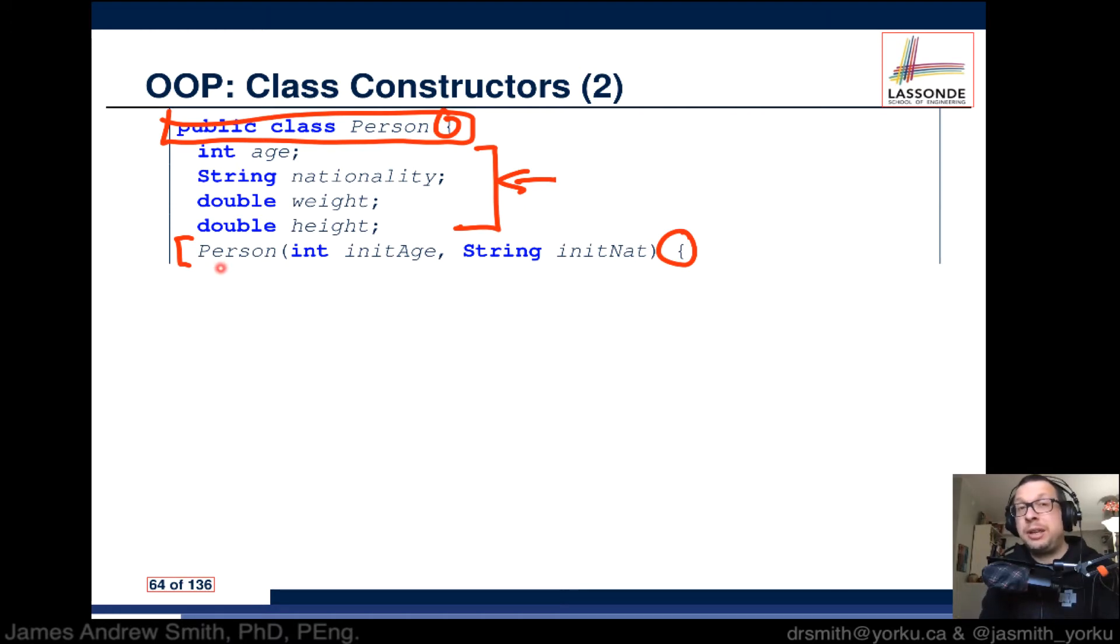What it's basically saying is this is how you call the class to create the object. We use the word Person, which is from here, and then there's an input parameter there and another input parameter there.